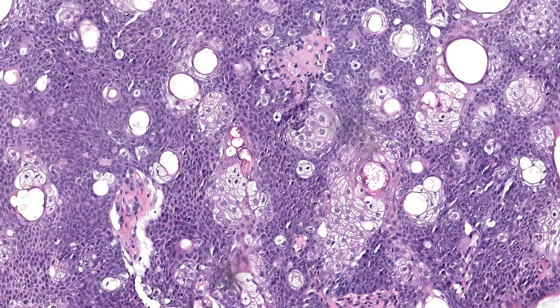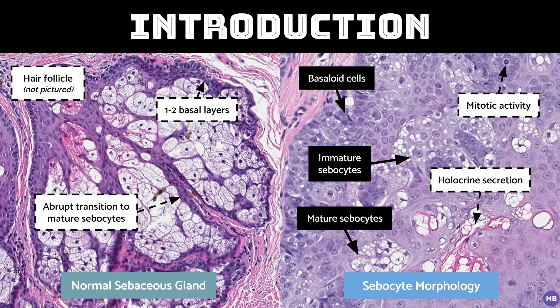Before we get into the differential, let's go back to the basics. A normal sebaceous gland is composed of small lobules of mature sebocytes — these large vacuolated cells — with a thin rim of peripheral basaloid cells, the cells that give rise to the sebocytes. Sebocytes secrete sebum, an oily substance, via holocrine secretion, which essentially means the cells die to release their contents. You can see a bit of that right here. Normal sebaceous glands are also associated with the hair follicle.